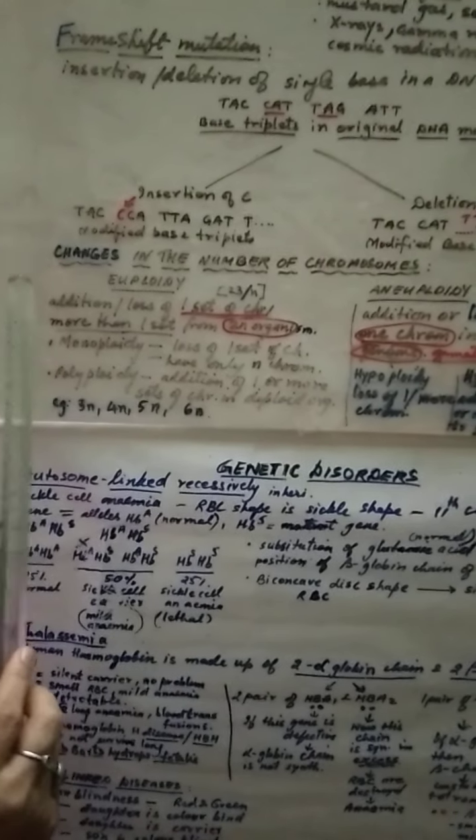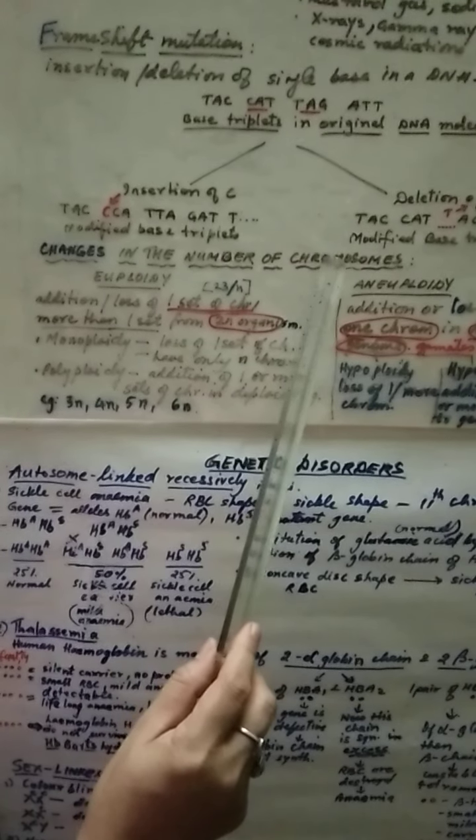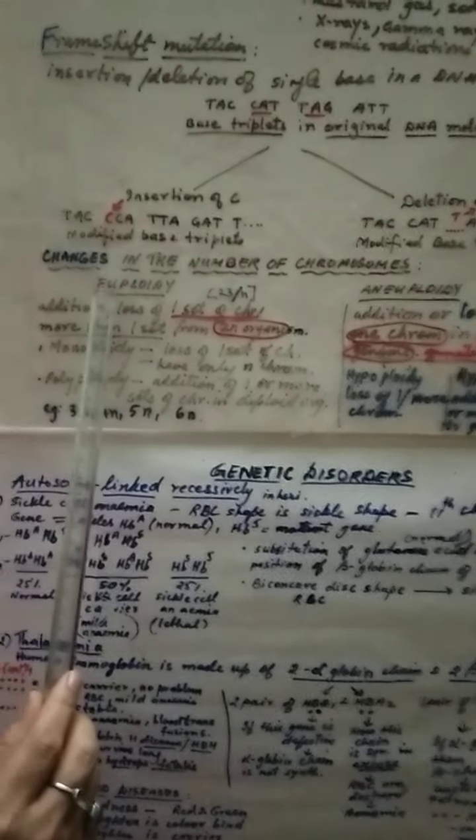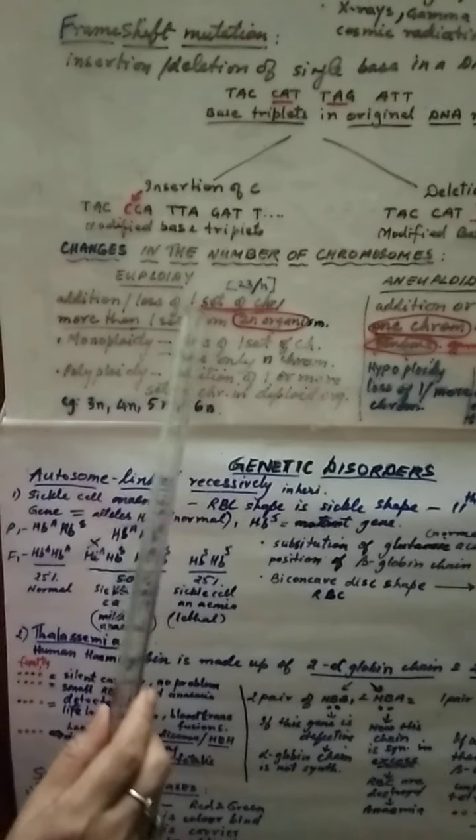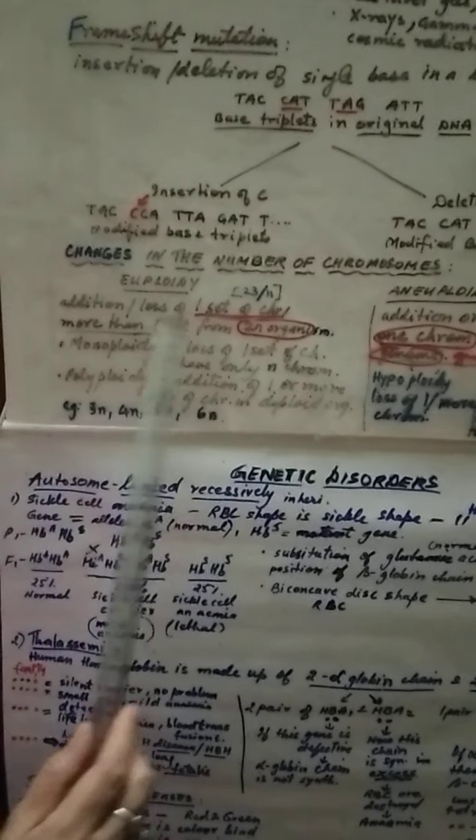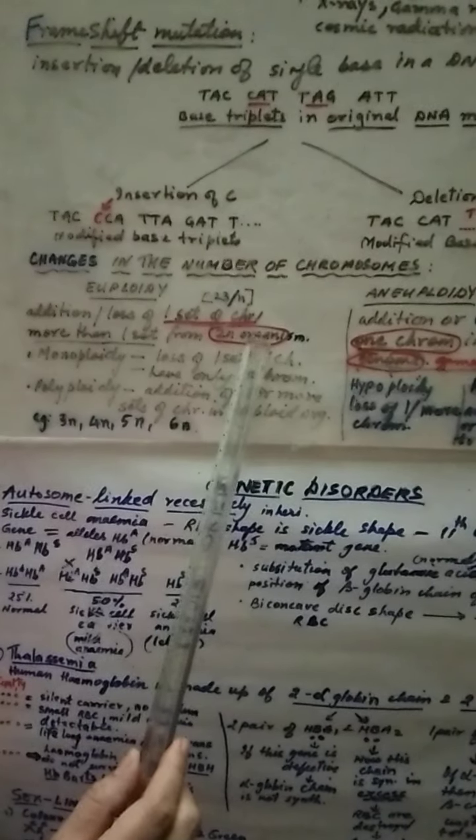Next topic we are going to see is changes in the number of chromosomes. According to this also, there are two types of mutations. First is called euploidy. In euploidy, there can be addition or loss of one set of chromosome. It can be one or more than one set in a diploid organism.